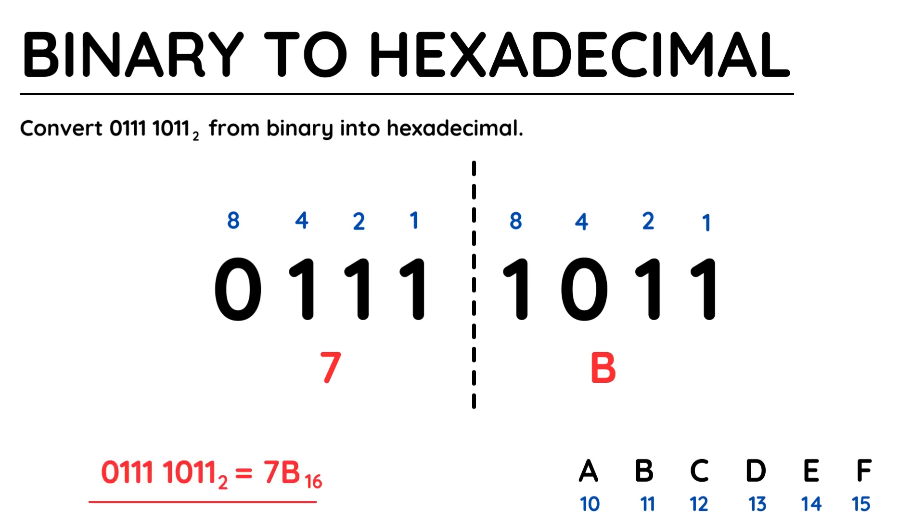And that's it, 01111011 in binary is equivalent to 7B in hexadecimal. In my answer, I've clearly written the base number next to the value, 2 for a binary number, and 16 for a hexadecimal number.